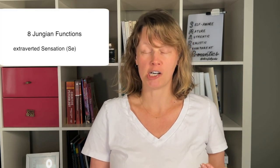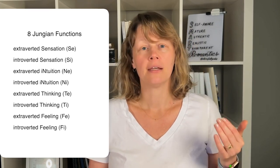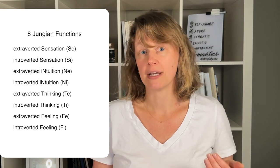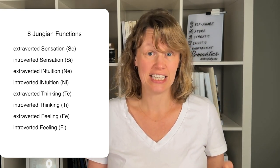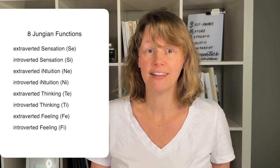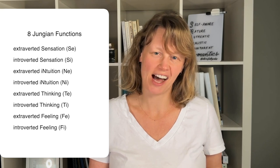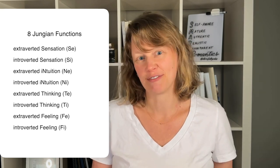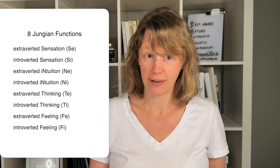The eight Jungian functions are: extroverted sensing, abbreviated as SE; introverted sensing, or SI; extroverted intuition, NE; introverted intuition, NI; extroverted thinking, TE; introverted thinking, TI; extroverted feeling, FE; and introverted feeling, FI.